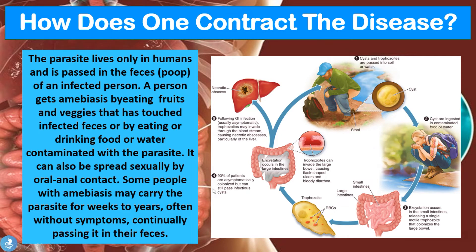About 90% of patients — 9 out of 10 — will remain asymptomatic with trophozoites in their large intestine, but they can still pass the infection on to others by contaminating food or water sources. In patients who do develop symptoms, the trophozoites can invade the large bowel causing flask-shaped ulcers and bloody diarrhea. From there, extra-intestinal manifestations can occur — trophozoites may invade the liver through the bloodstream causing necrotic abscesses. The disease can also be spread through oral-anal sexual contact, causing a person to ingest cysts from the infected individual.